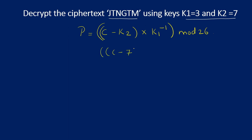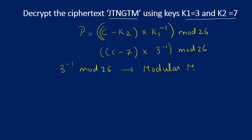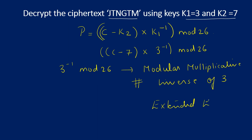We are going to compute (C − 7) × 3⁻¹ mod 26. The modular multiplicative inverse of 3 is not the same as 1/3 — a specific procedure is needed. I have made a detailed video on how to compute modular multiplicative inverse; check the link in the description. The standard algorithm used is called the Extended Euclidean Algorithm, which I will cover in upcoming videos.